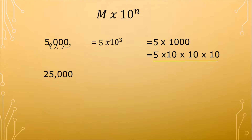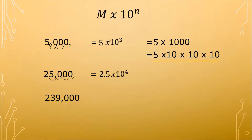Another example: we have 25,000. That would give us 2.5 times 10 raised to the fourth power, because we moved 4 places. Another example is 239,000. The decimal point is located after the last digit, so we move it and get 2.39 times 10 raised to the fifth power.